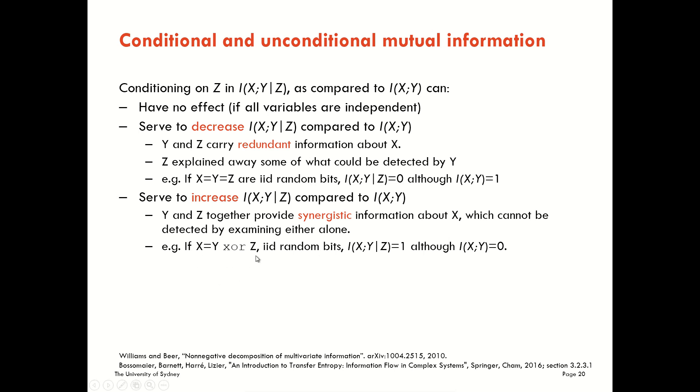We can see it quite clearly from an exclusive or. As I say, if these are i.i.d. bits, knowing Y on its own won't tell us anything about X. But if we already know Z, then adding that knowledge of Y gives us everything we need to know about X. That's a synergistic relationship.